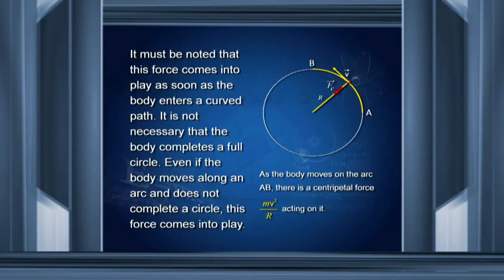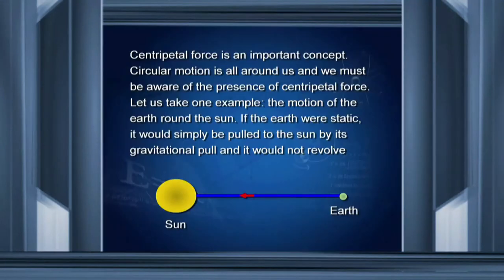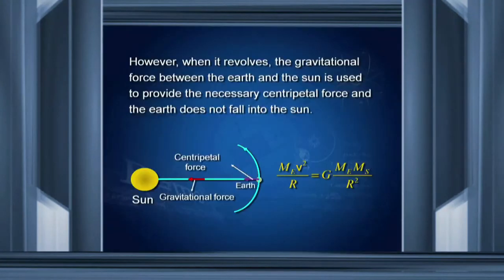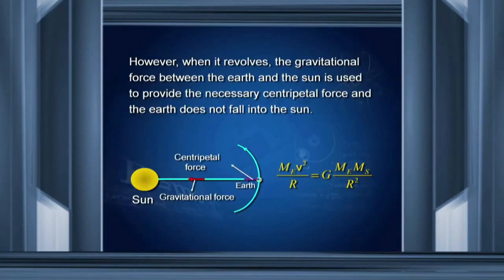Why is the centripetal force so important? If the Earth were stationary, the Sun would attract it and the Earth would fall into the Sun. However, if the Earth is moving in a circular orbit, it requires centripetal force, and this centripetal force is provided by the gravitational force between the Sun and the Earth. So the gravitational force is used as the centripetal force for the motion of the Earth around the Sun, and therefore the Earth does not fall into the Sun.